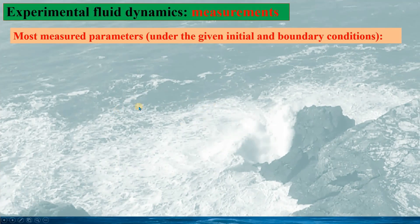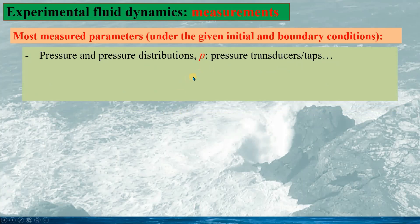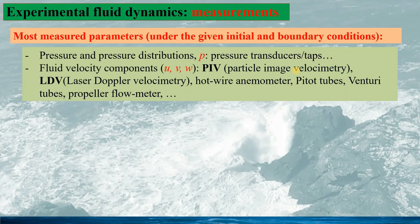In experimental fluid dynamics, similarly under the given initial and boundary conditions, we can measure the pressure and pressure distributions using pressure transducers and pressure taps. We also measure fluid velocities using different methods, for instance PIV (particle image velocimetry), LDV (laser Doppler velocimetry), hot wire anemometer, Pitot tubes, Venturi tubes, propeller flowmeters, etc.